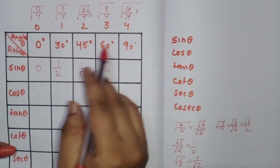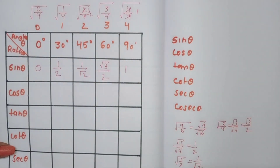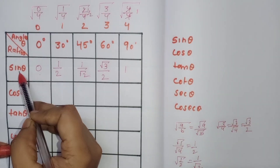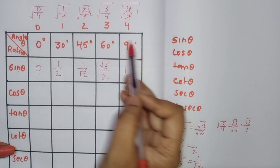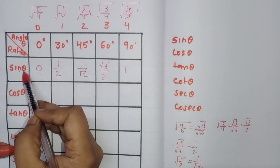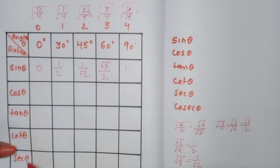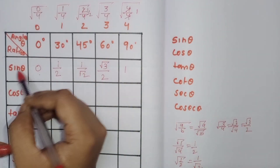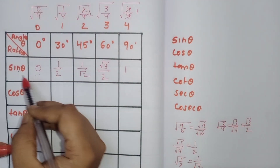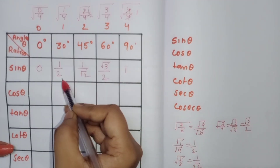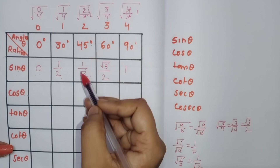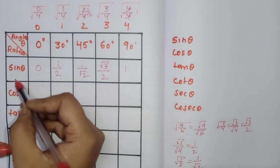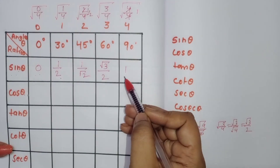So the sine values we have found are: sin 0° = 0, sin 30° = 1/2, sin 45° = 1/√2, sin 60° = √3/2, sin 90° = 1. We write angle theta horizontally and the trigonometric ratios vertically.